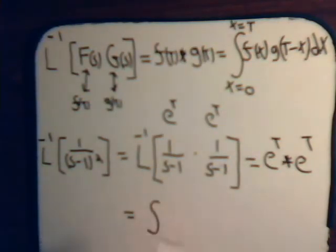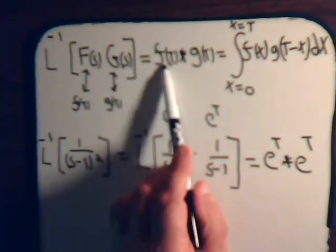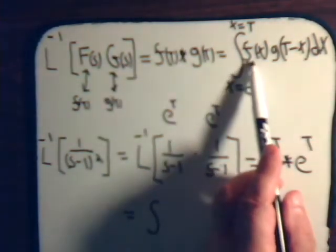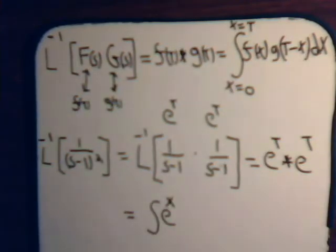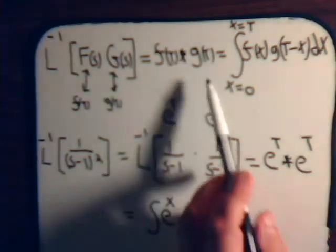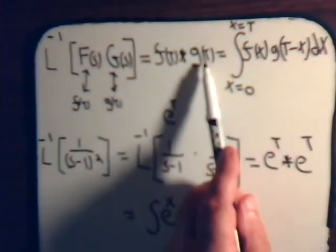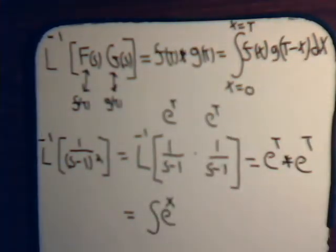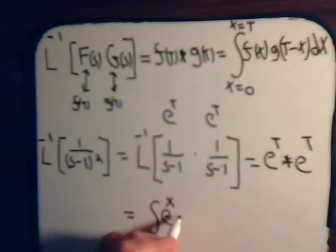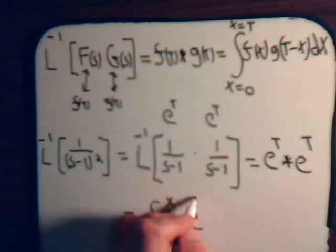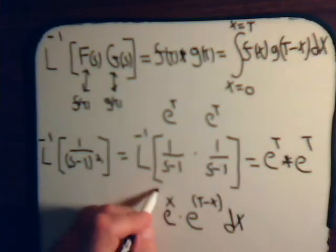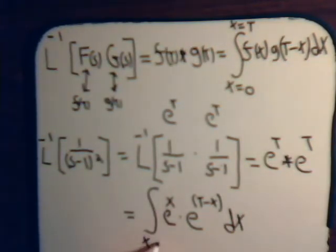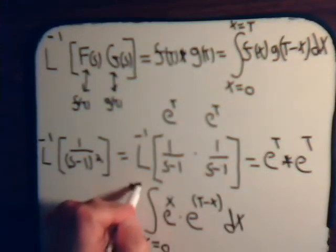Just following our recipe: this e to the t corresponds to f of t. Inside the integral, f of t becomes f of x, so this will be e to the x. Then this e to the t corresponds to g of t. Inside the integral, g of t becomes g of t minus x, so inside the integral this will be times e to the t minus x. dx, with x going from 0 to x equals t.